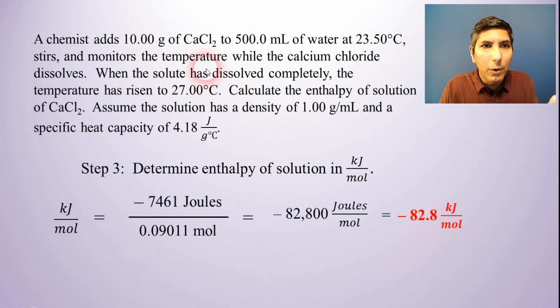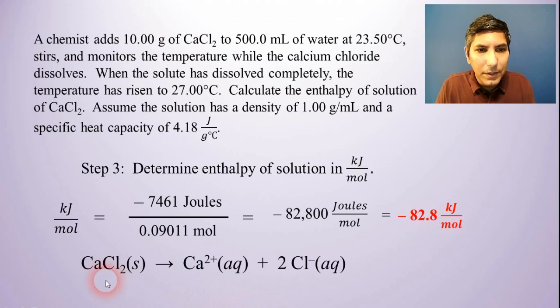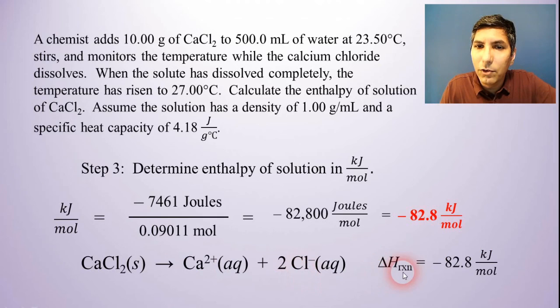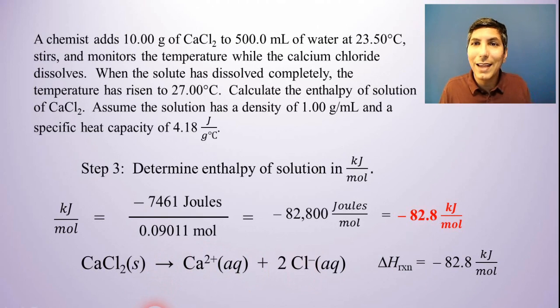Now what does this mean? Well that means that we dissolved calcium chloride in water, so this chemical process took place. The calcium chloride solid was dissociated into its component ions, the calcium ions and the two chloride ions. The delta H for that process is -82.8 kilojoules per mole. We can calculate that and determine that in the lab fairly easily as you can see right here.